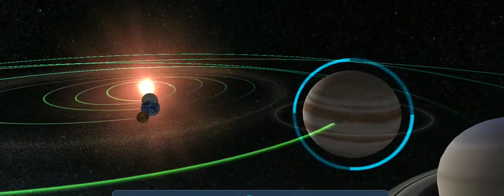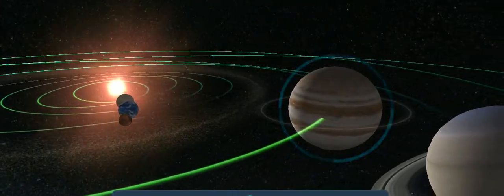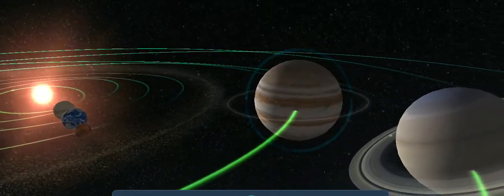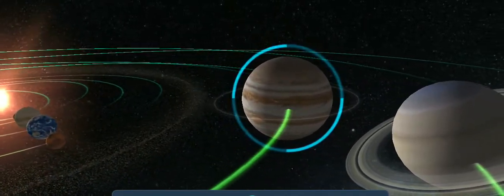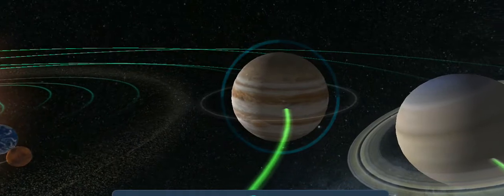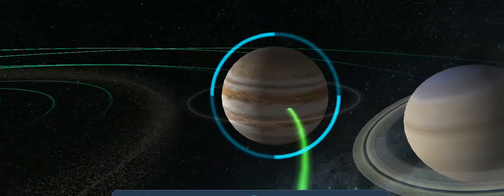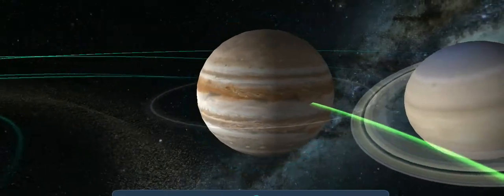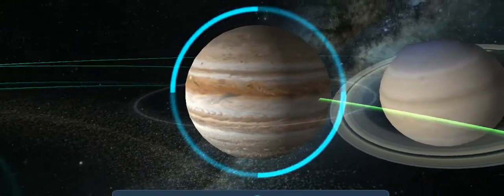Jupiter is the fifth planet from the Sun, second from the Earth, and the closest of the outer planets. It is the largest planet in the solar system, with a diameter of 142,984 kilometers. It has two and a half times the mass of all the other planets combined.